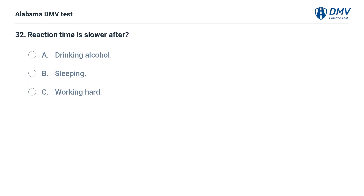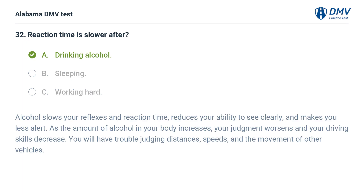Reaction time is slower after: A. Drinking alcohol. B. Sleeping. C. Working hard. Correct answer: A. Alcohol slows your reflexes and reaction time, reduces your ability to see clearly, and makes you less alert. As the amount of alcohol in your body increases, your judgment worsens and your driving skills decrease. You will have trouble judging distances, speeds, and the movement of other vehicles.